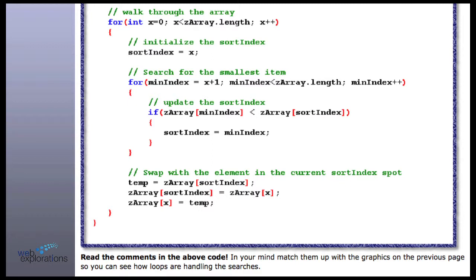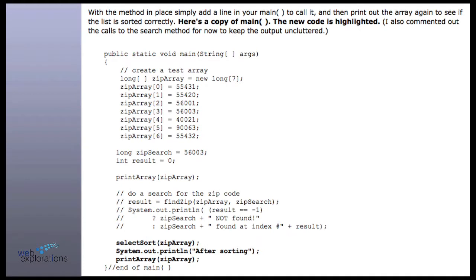Not too complicated code. If you type this in and step through it with a small block of data like the six items, you'll see how this works — it'll match those pictures we just went through. Here's what all the code looks like together. In main, we print out our array, do our selection sort, and then print it out after sorting to double check the data. Did it put it in the right order? I love it when it works.